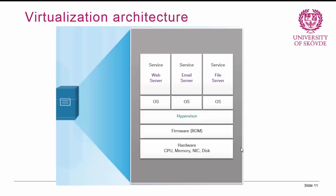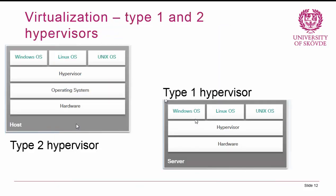Let's look very briefly at the virtualization architecture. Basically we have hardware — CPU, memory sticks, network interface cards, hard drives, and so forth — then some firmware, and then an operating system running some services. When we work with virtualization, we put a hypervisor in between the firmware and the operating systems, and we can run multiple operating systems on top of that hypervisor. There are two different types of hypervisors: type 1 and type 2.